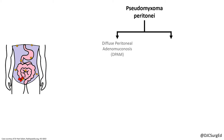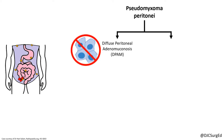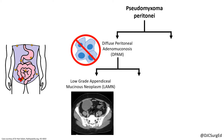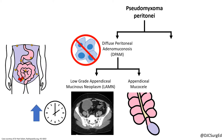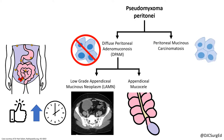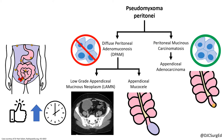The first group is diffuse peritoneal adenomucinosis, characterized by intraperitoneal acellular mucin without tumor cells from a ruptured low-grade appendiceal mucinous neoplasm — formerly known as a cystadenoma or ruptured appendiceal mucocele. This carries a more indolent course and a better prognosis than peritoneal mucinous carcinomatosis, which is characterized by peritoneal mucinous deposits with tumor cells from an underlying malignancy such as appendiceal adenocarcinoma with mucinous histology.